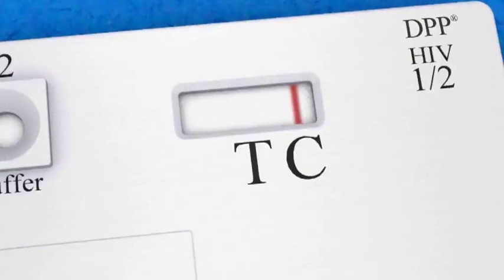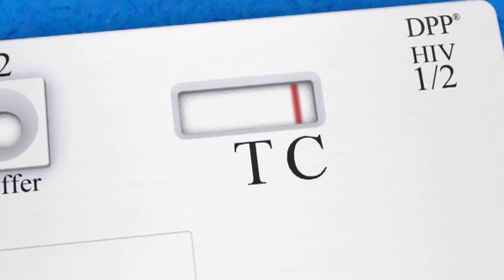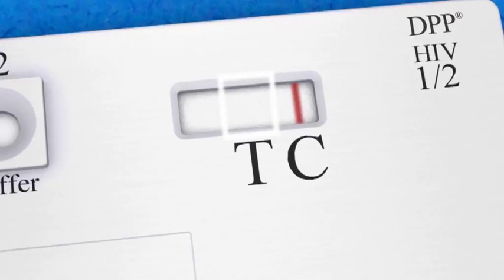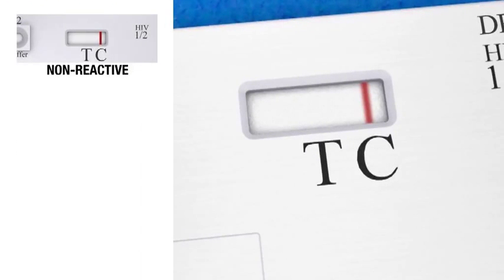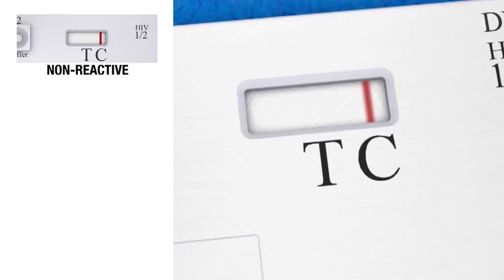First, make sure that a reddish control line has formed above the T marking in the test window. If no control line is visible, then the test is invalid and a new test must be run. If no line has formed above the T marking in the test window, the result is non-reactive, meaning that the patient is preliminarily negative for HIV-1 and or HIV-2 antibodies. Be aware that this does not necessarily exclude HIV infection.